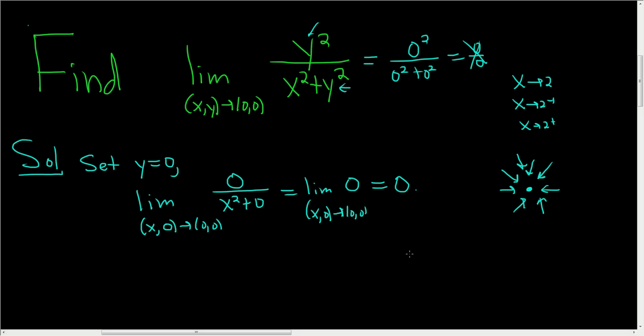Does that mean that the answer is 0? No, it certainly does not. We have to get the same answer no matter what direction we approach from. So now let's try setting x equal to 0 and see if we get the same result. If we get a different result, then we know that the limit does not exist.